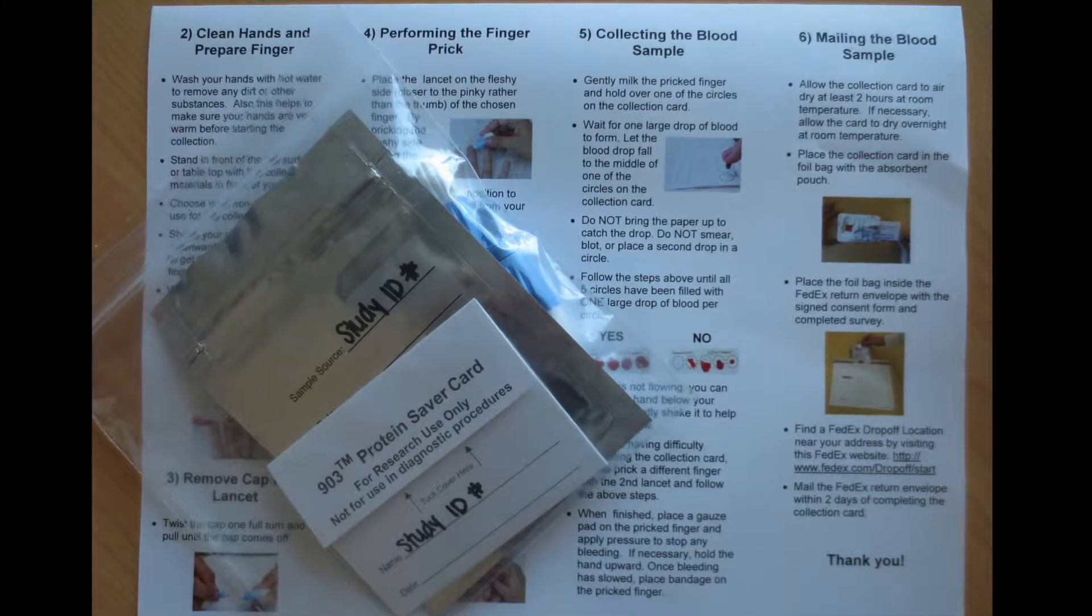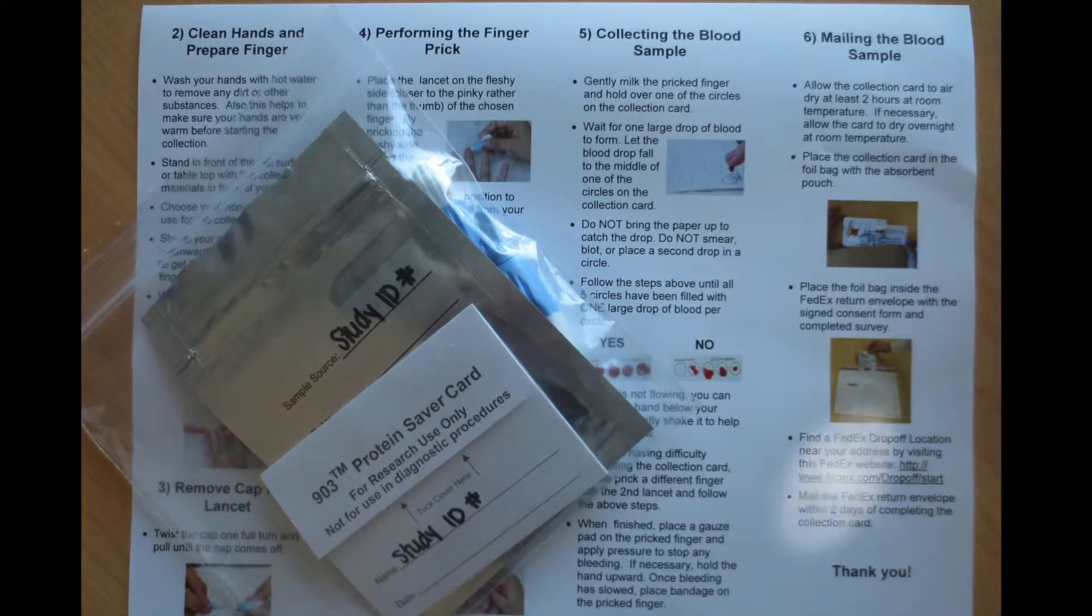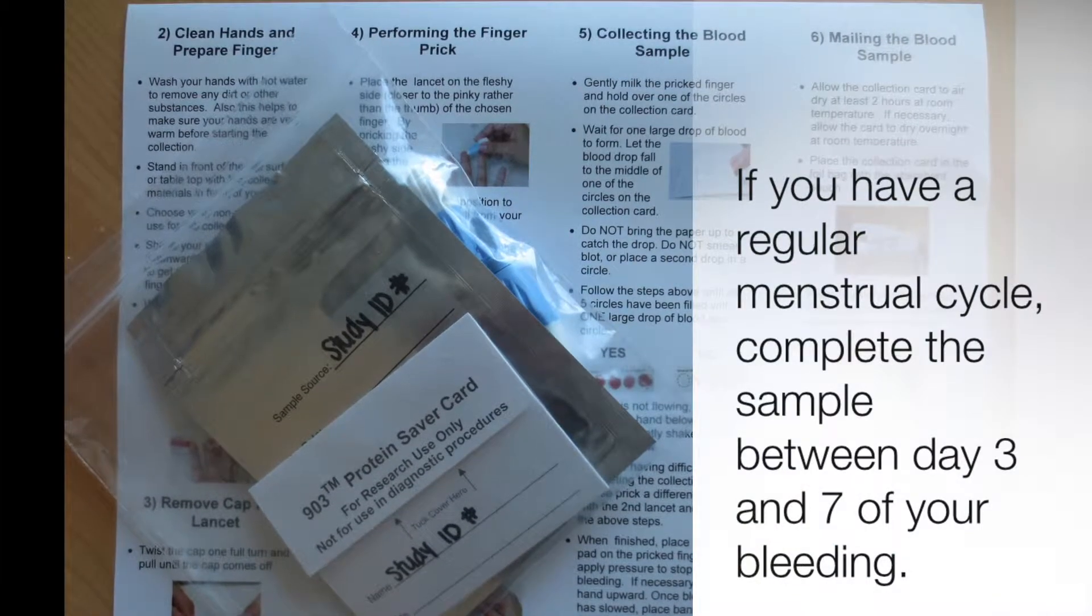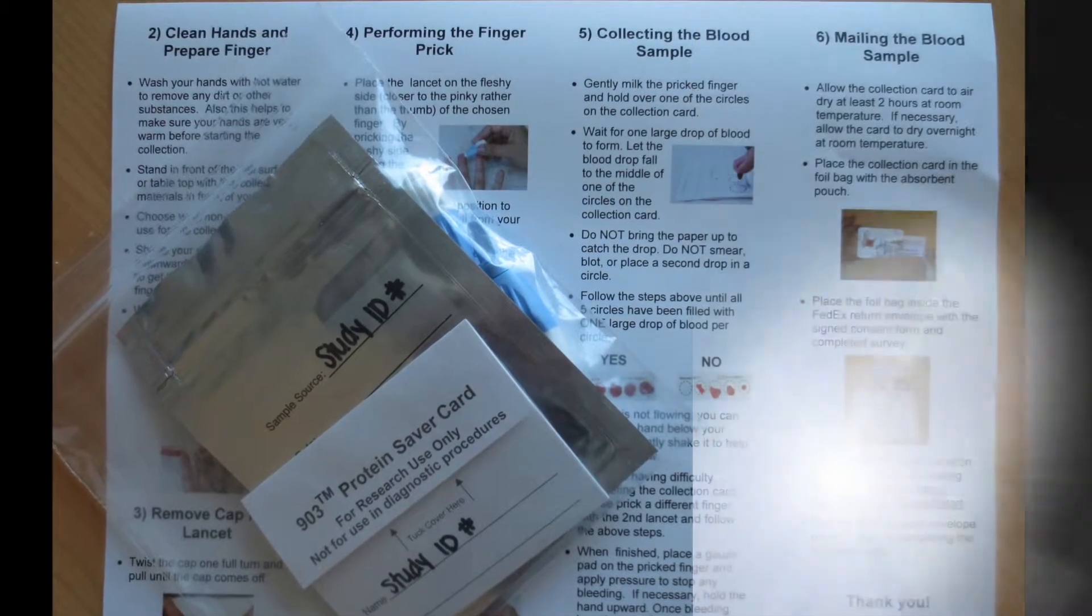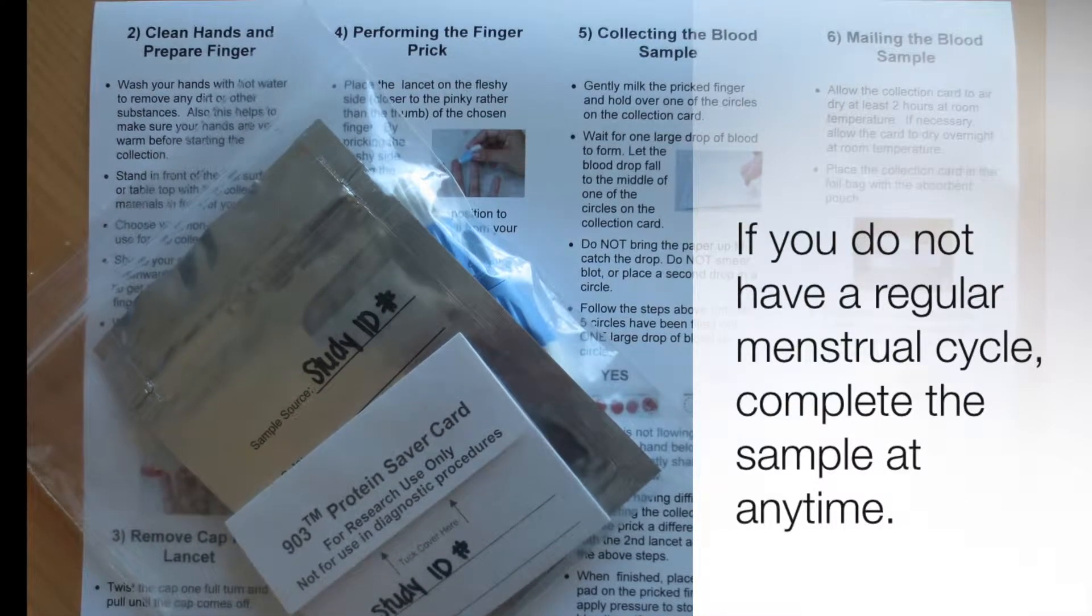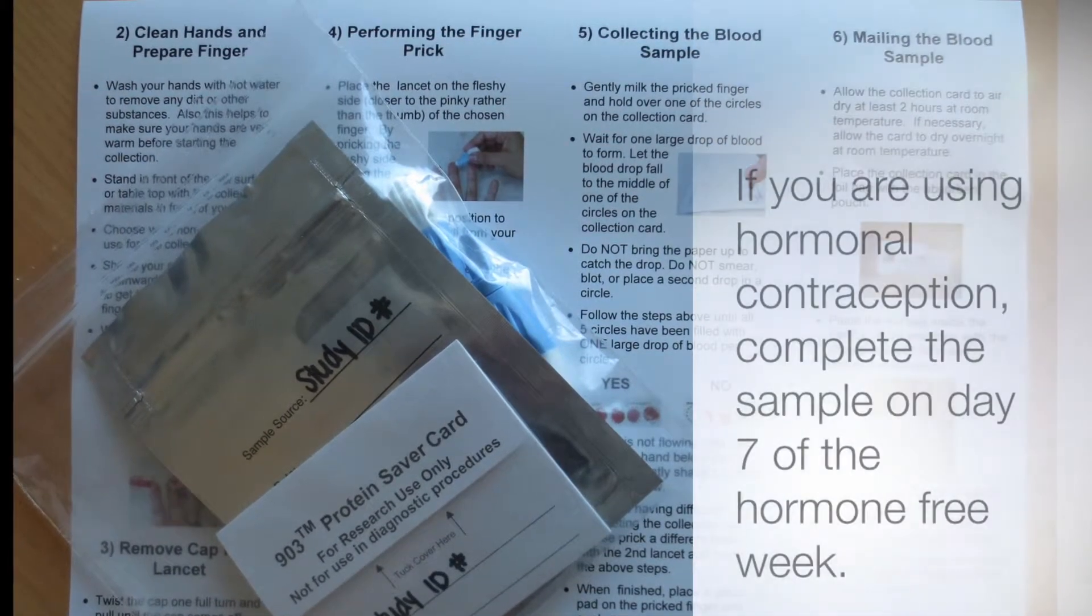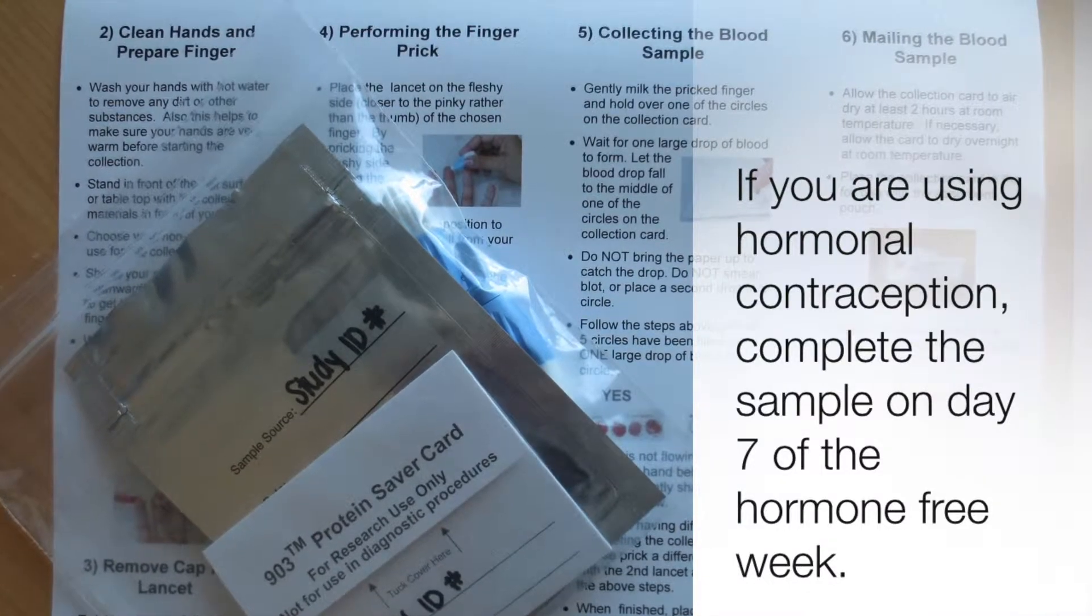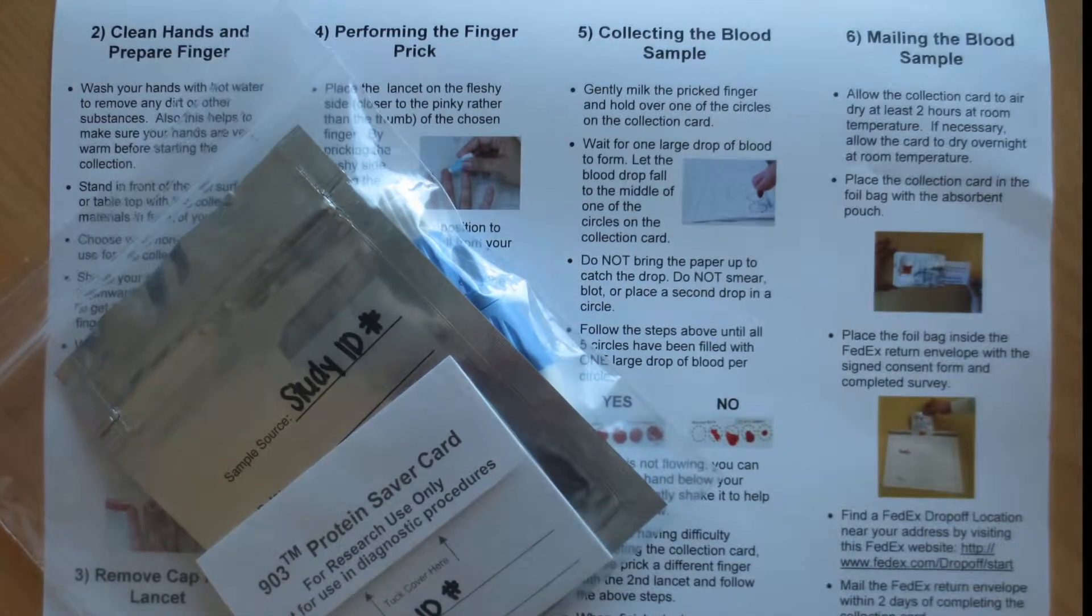Time the collection of your sample to your menstrual cycle. If you have a regular menstrual cycle, complete the sample between day 3 and 7 of your bleeding. If you do not have a regular menstrual cycle, complete the sample at any time. If you are using hormonal contraception, complete the sample on day 7 of the hormone-free week.